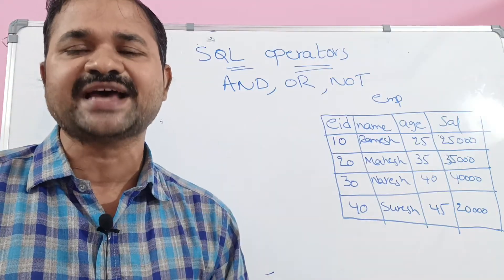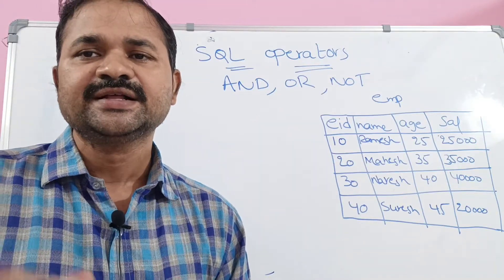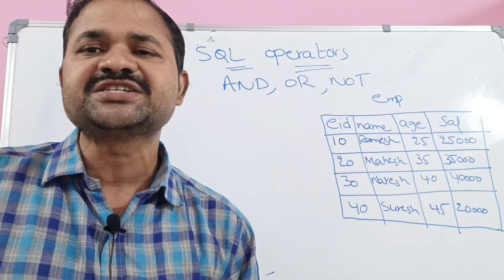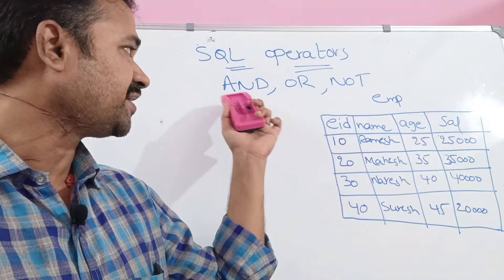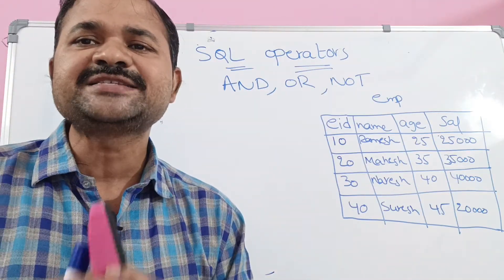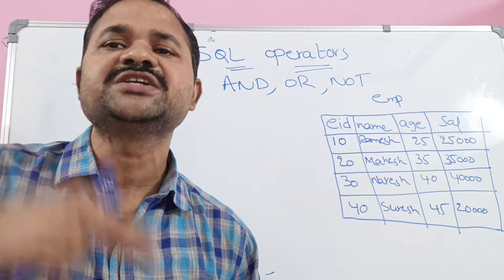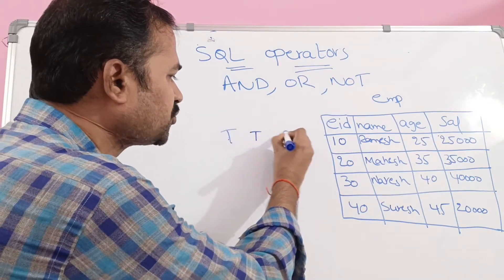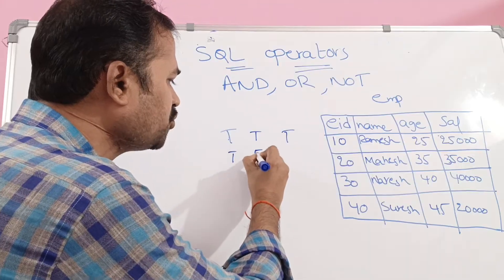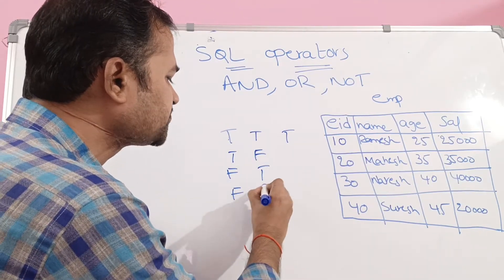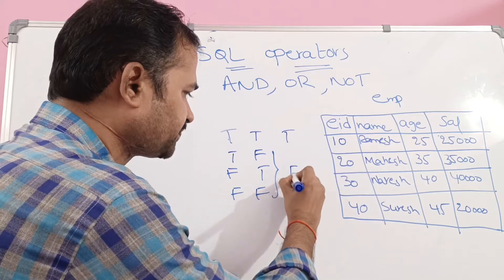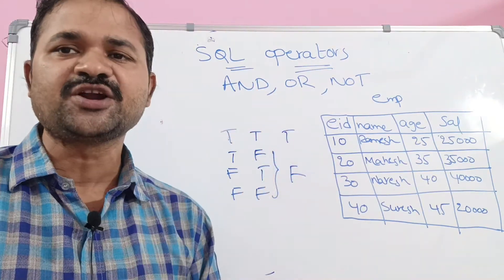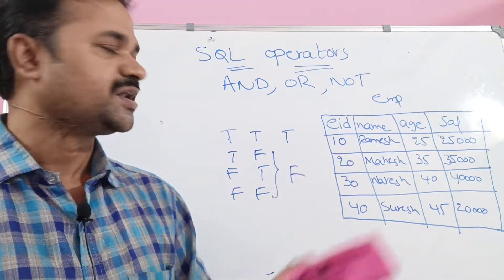First, let's see what AND is. AND displays all the records when all the conditions are true. So true AND true means true. True AND false means false. False AND false means false. It displays records only when all conditions are true; otherwise it returns false.